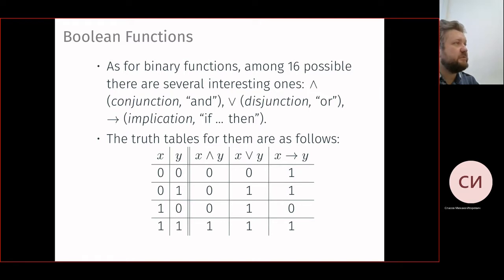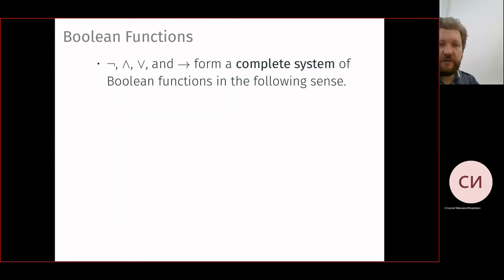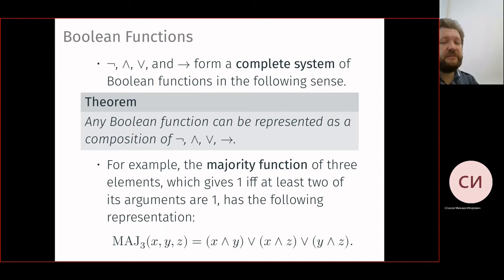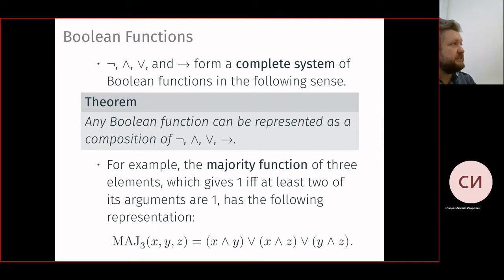The meaning of implication in Boolean logic is not the same as in natural language, where we usually think about relevance. For example, 'if 2+2=5 then the Volga flows to the Caspian Sea' is mathematically true but feels meaningless in natural language. These operations — conjunction, disjunction, implication — form a complete system: any Boolean function of any number of arguments can be represented as a composition of these.